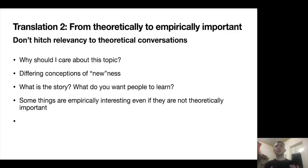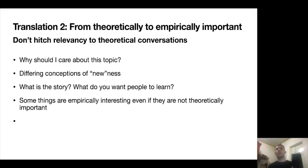Secondly, once we've shifted audience, we need to reframe the piece — why it's important and why it's new. We need to move from theoretical importance to empirical importance. In the social sciences, we often think a piece is relevant because we can draw broadly applicable principles from it. But blog articles don't have to be framed that way. Sometimes a great story is important in and of itself. You should always ask why someone should care and what's new, but how you answer that question can be very genre-specific. Some things are empirically interesting even if they're not theoretically important.